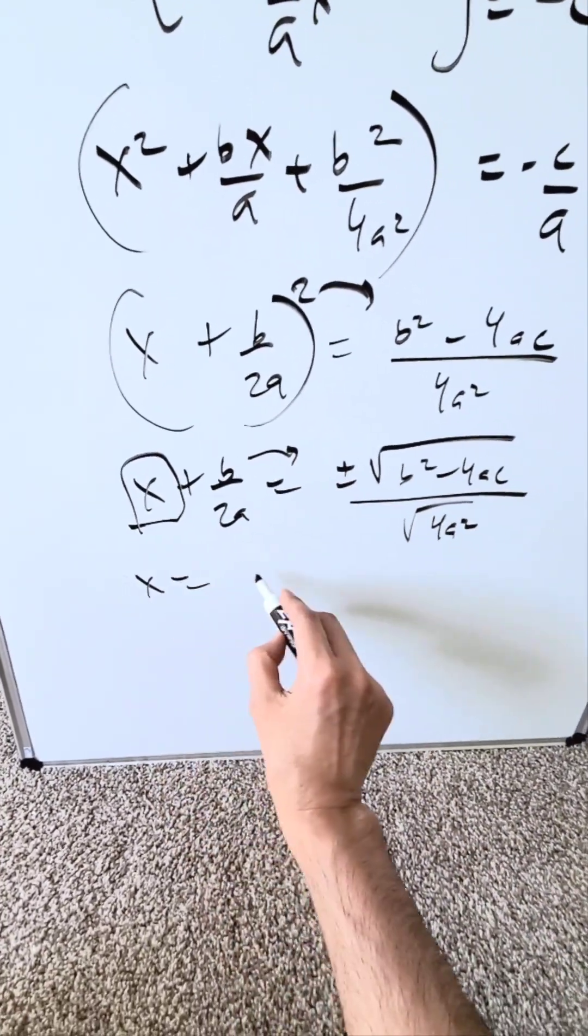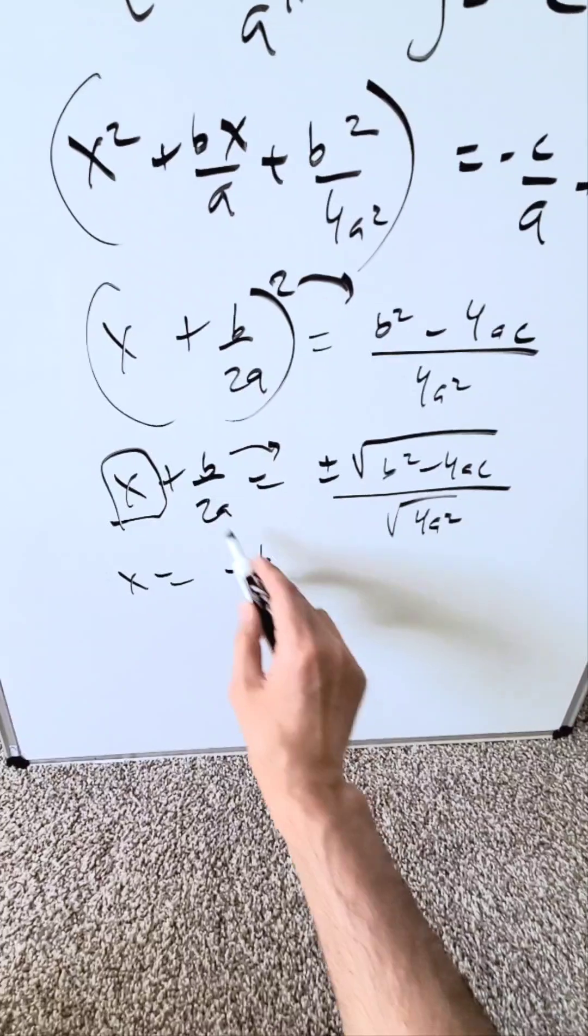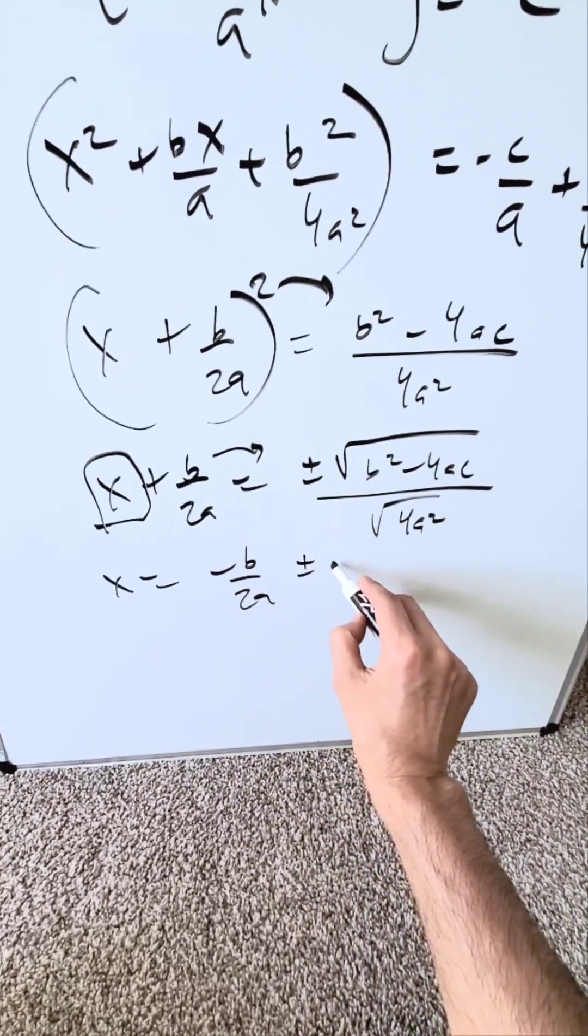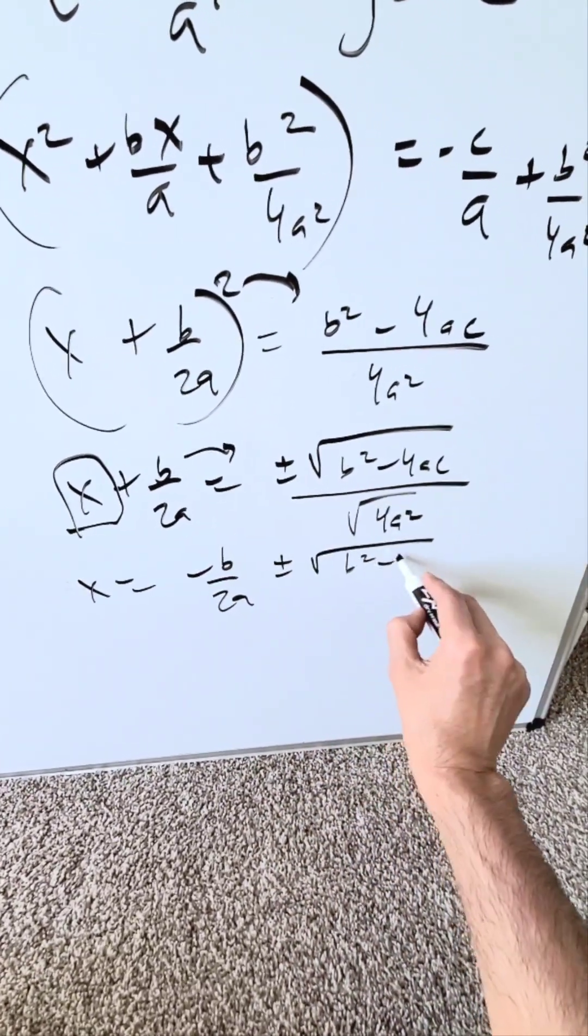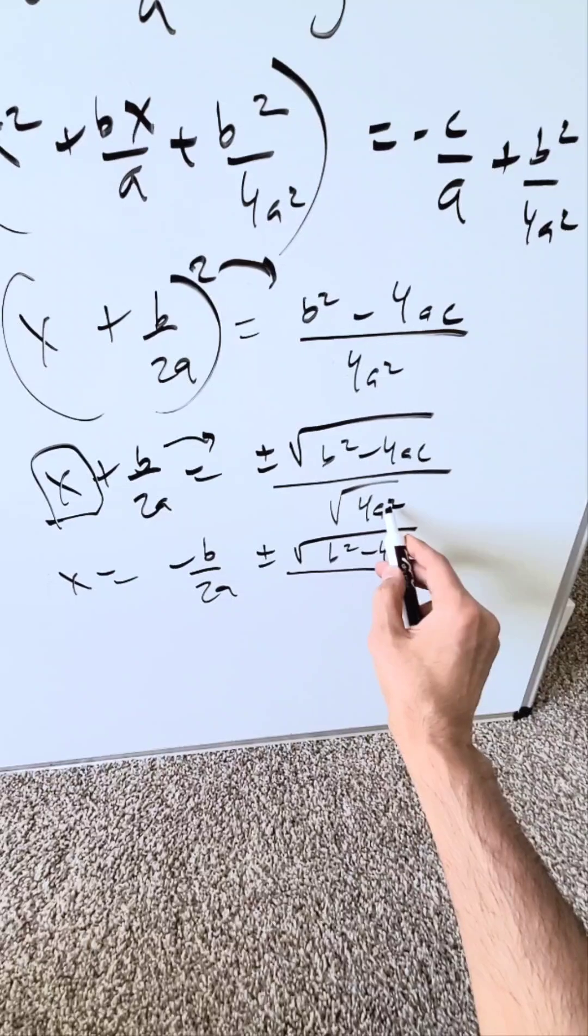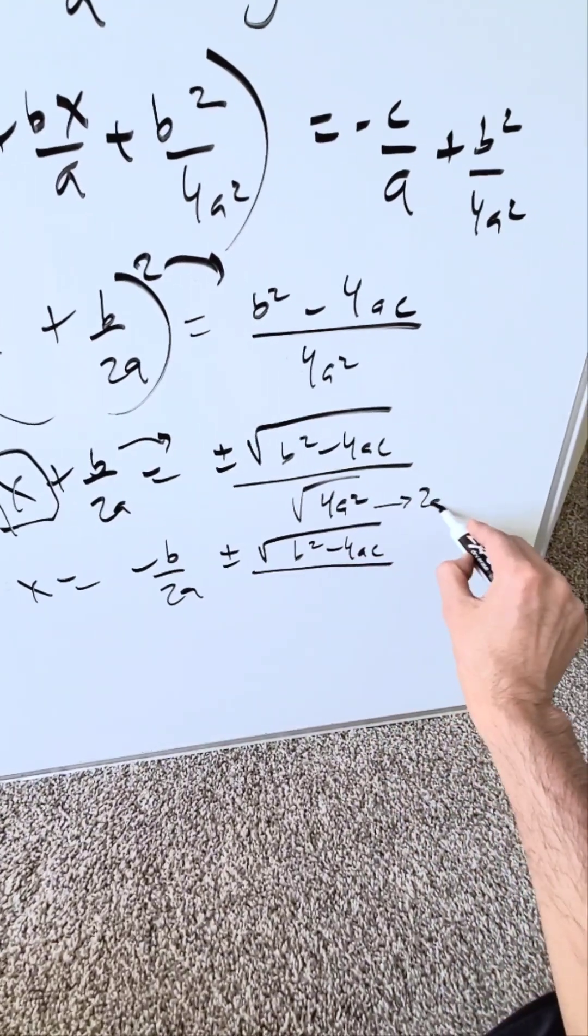Push this on the other side. x is equal to minus b over 2a. I'm writing this term first. Plus and minus. I have square root b squared minus 4ac divided by the perfect root coming out from here as 2a.